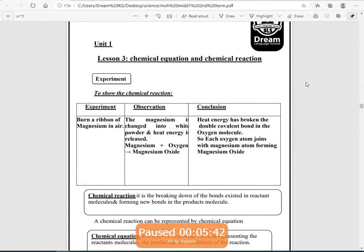Now we have an experiment to show the chemical reaction. First, we will burn a ribbon of magnesium in air. We will observe that the magnesium is changed into white powder, and heat energy is released. So, when we put magnesium to oxygen, magnesium oxide will be formed.